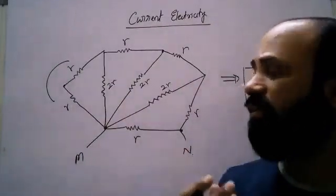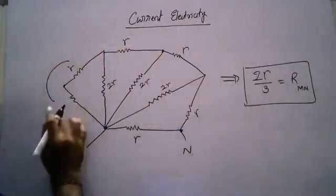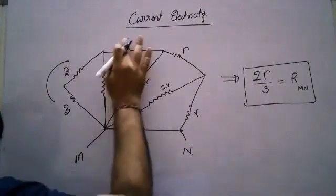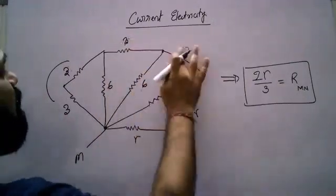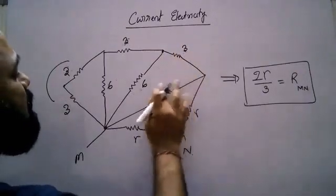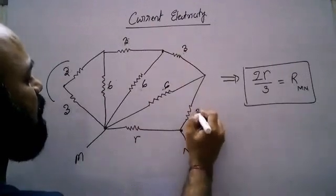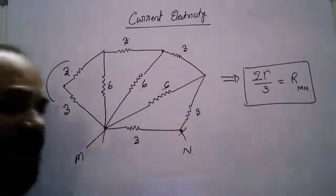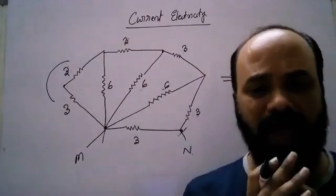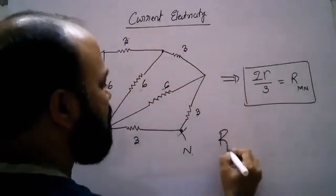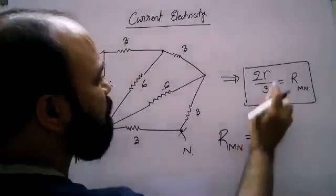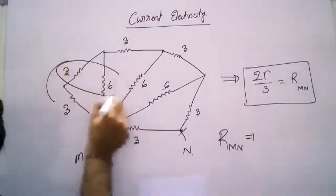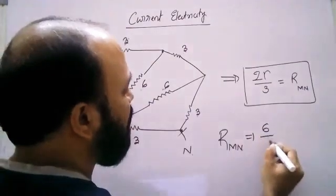Suppose this problem they will give in different ways. They may give values like: this is 3, this is 3, this is 3, this is 6, again this is 3, this is 6, this is 3, and this is 3. Now if they ask what is the effective resistance between points M and N, I give a beautiful shortcut — no need to do anything. Just use the formula 2R by 3. The ratio of 6 by 3 is 2.